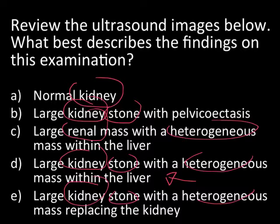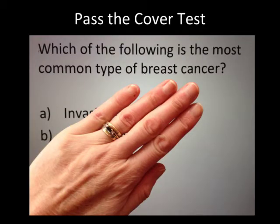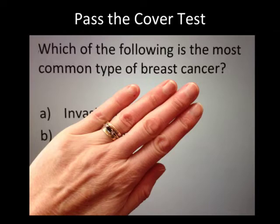With an image-based question, you want test-takers to have to look at the image to get the right answer. There's a second important test — for both image and non-image-based questions — called the cover test. If you cover up the answer options (not the image), can a knowledgeable test-taker still answer the question? For example: which of the following is the most common type of breast cancer? You shouldn't need to see the options to answer that. I'll show examples of questions that fail the cover test later on.